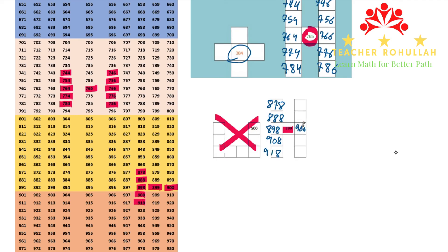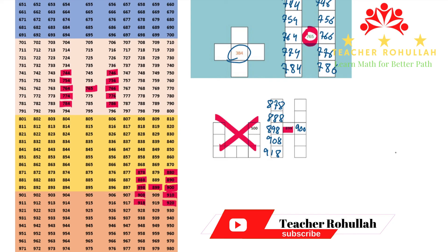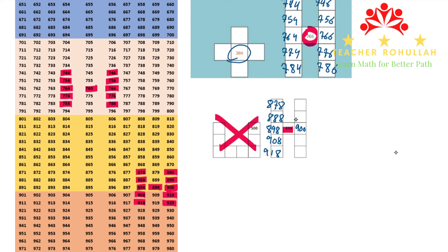Let's now look at 900 and find the number above it and below it. 900 is here, and the number above it is 890. And above 890, we have 880. The same way, we have 910 below 900 and 920 below 910. So above 900 we have 890 and 880, and below it we have 910 and 920.